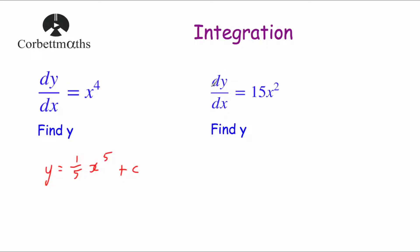Next example: if we were given dy by dx as the gradient function and wanted to find y, we write y equals, add 1 to the power — so that'd be x cubed, because 2 plus 1 is 3 — then divide by the new power. There's a 15 there; we divide by 3, so that's 5. The answer is y equals 5x cubed plus c. Always put that plus c on the end when you're integrating.